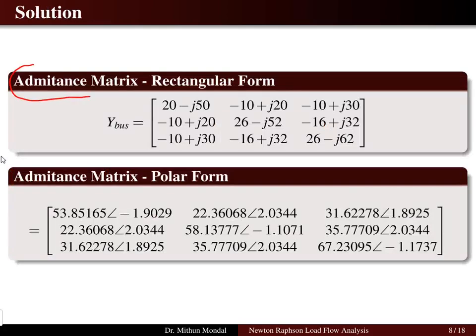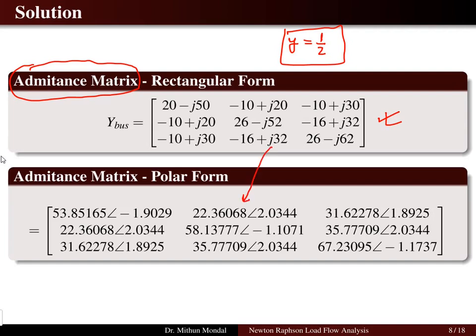First, we obtain the admittance matrix from the single-line diagram impedances using y = 1/z. The Y-bus computation was already performed in the Gauss-Seidel method for this problem, so it will not be repeated here. We convert the rectangular form to polar form to get the magnitude and phase of each Y-bus element. Note that magnitudes are in per unit but the angles are in radians.